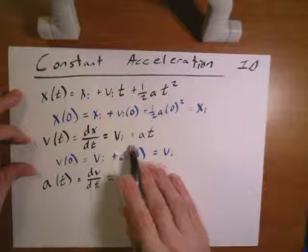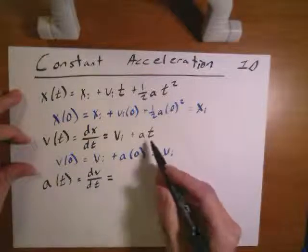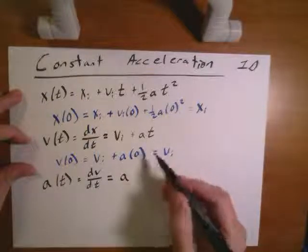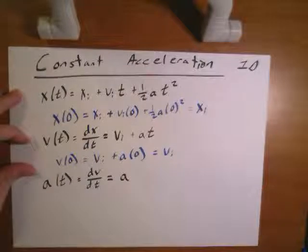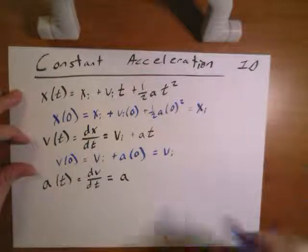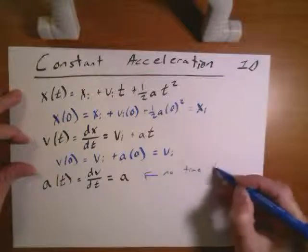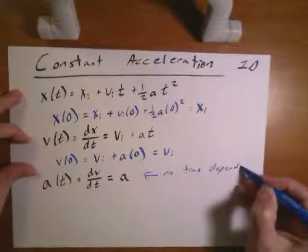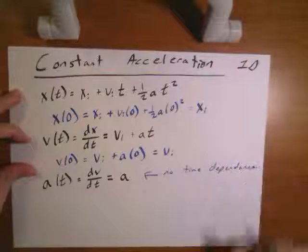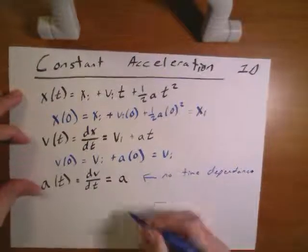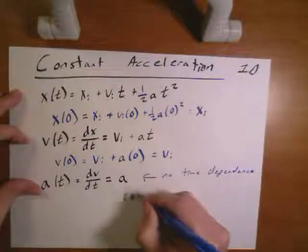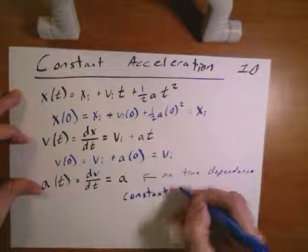vi is a constant, so I'm left with just this term, which is first order in time, so that becomes just a. Notice, no time dependence. If there's no time dependence, that means we've got a constant acceleration.